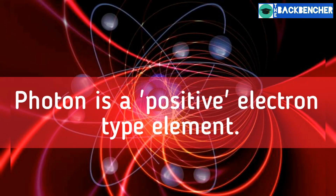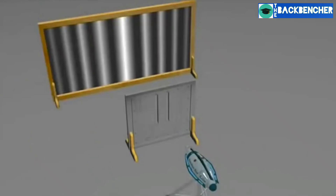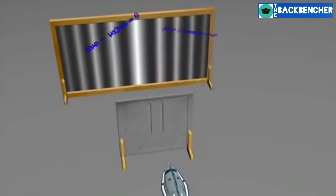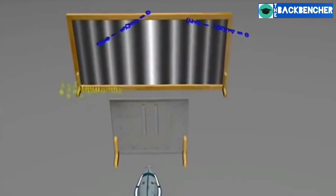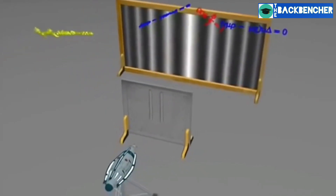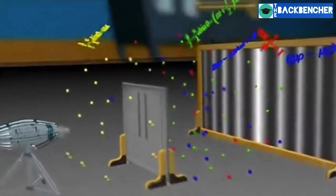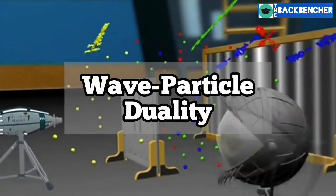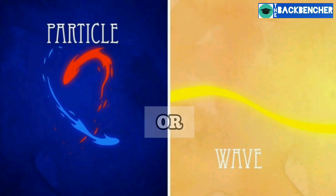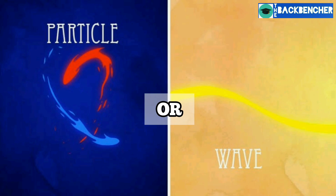Furthermore, the version of this experiment that includes detectors at the slits finds that each detected photon passes through one slit, as would a classical particle, and not through both slits, as would a wave. However, such experiments demonstrate that particles do not form the interference pattern if one detects which slit they pass through. The results demonstrate the principle of wave-particle duality.